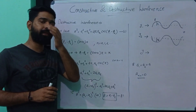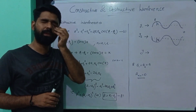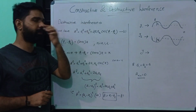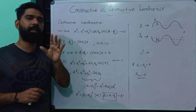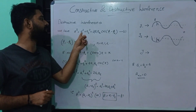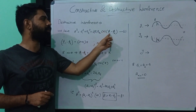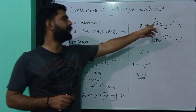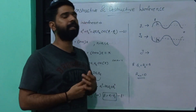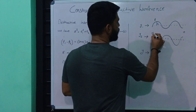We are going to get a constructive interference, and we are going to get a destructive interference. We will get the same equation: a squared is equal to a1 squared plus a2 squared plus 2·a1·a2·cos(φ1 minus φ2), where a1 is the amplitude of the first wave, a2 is the amplitude of the second wave, φ1 is the phase of the first wave, and φ2 is the phase of the second wave.